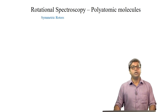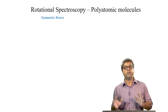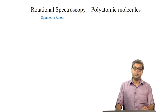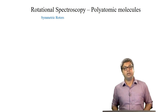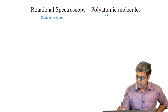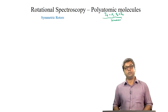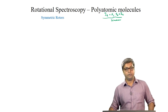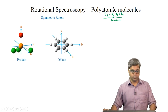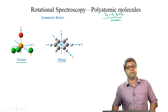Let us move on to symmetric rotors. For symmetric rotors, two of the principal moments of inertia are equal but the third is unequal. Linear molecules, where IA = 0 and IB = IC, can be thought of as a special case of symmetric tops. For symmetric tops or symmetric rotors, we have two types: prolate symmetric top and oblate symmetric top.